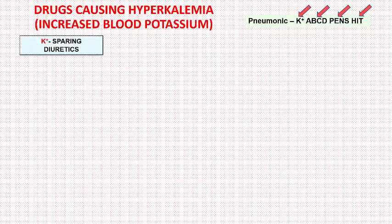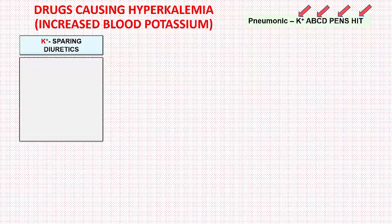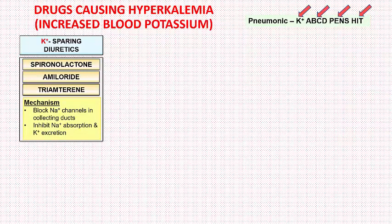The first class of drugs is potassium-sparing diuretics. There are three drugs available: spironolactone, amiloride, and triamterene. Spironolactone is a mineralocorticoid receptor antagonist — it prevents aldosterone from binding in the late distal tubule and collecting duct, resulting in sodium excretion and potassium retention. Amiloride and triamterene block sodium channels in the collecting duct, preventing sodium reabsorption and potassium secretion, which results in potassium retention and a potential for hyperkalemia.